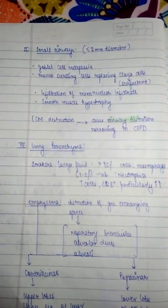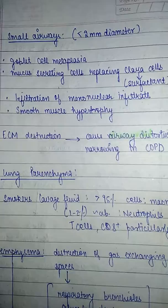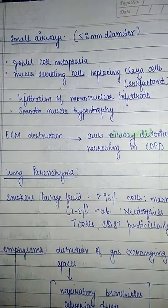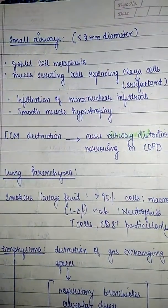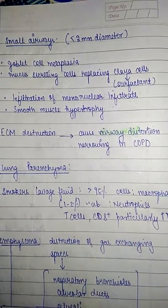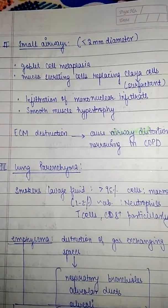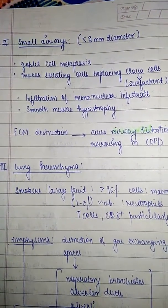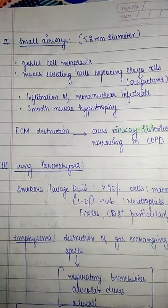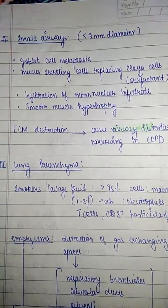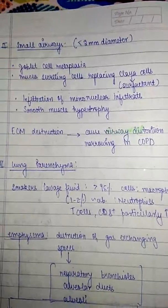In small airways less than 2 mm in diameter, there is goblet cell metaplasia — mucus-secreting cells replace the Clara cells. Clara cells are basically surfactant-producing cells. There is infiltration of mononuclear infiltrates, smooth muscle hypertrophy, and extracellular matrix destruction causing airway distortion and narrowing in COPD.